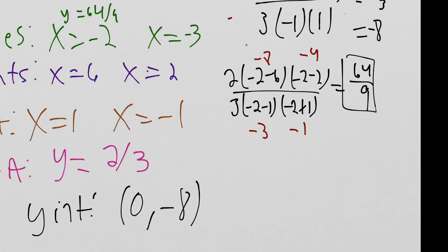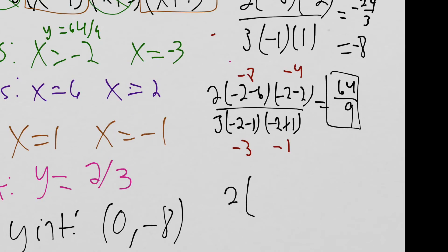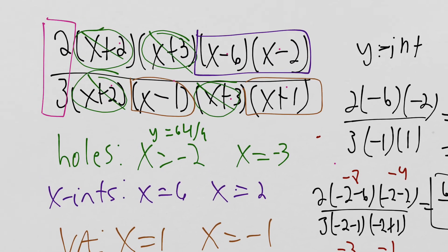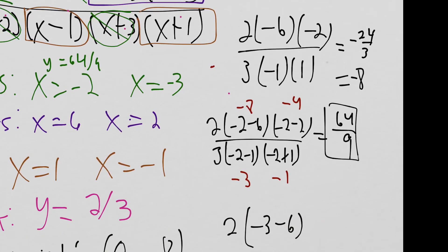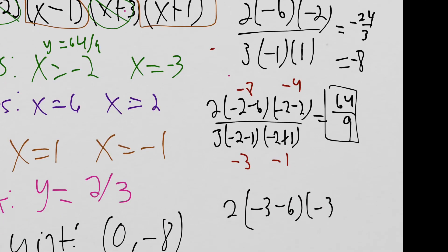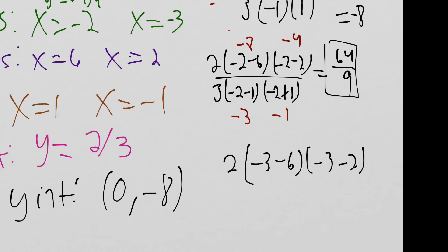And then let's do negative 3. So we get 2 times negative 3 minus, what am I doing here? So negative 3 minus 6, because it's x minus 6. And then negative 3 minus 2. And then over negative 3 minus 1 times negative 3 plus 1.